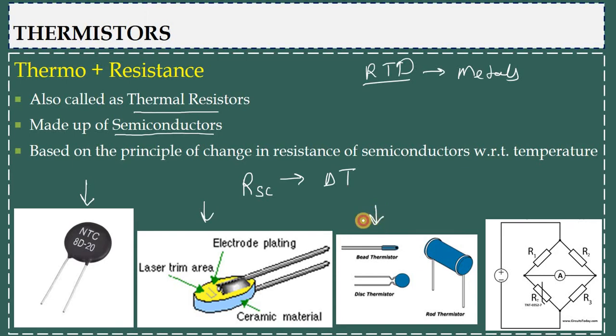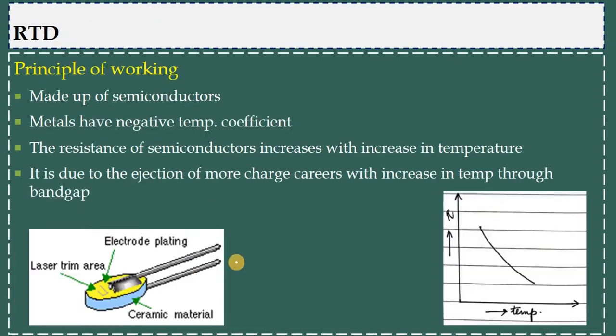I will tell you that metals have alpha is positive, but in case of semiconductors, alpha is negative. It has negative temperature coefficient. If we increase the temperature, then the resistance of semiconductor will decrease.